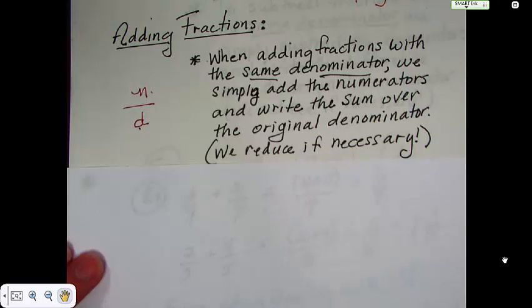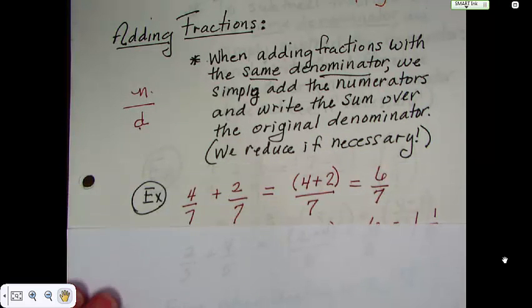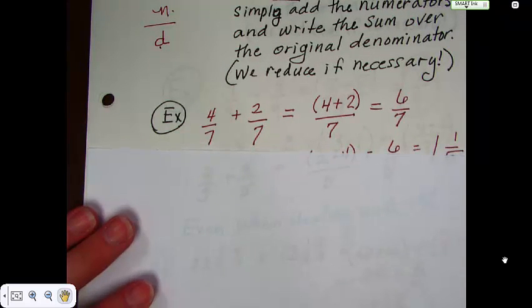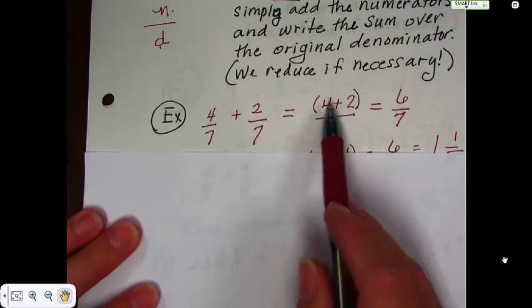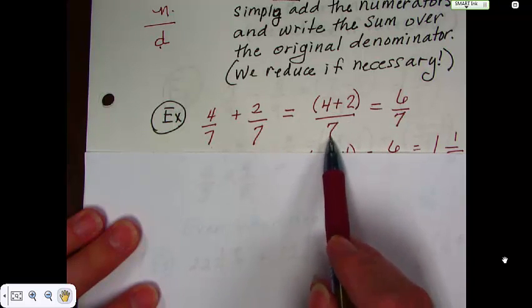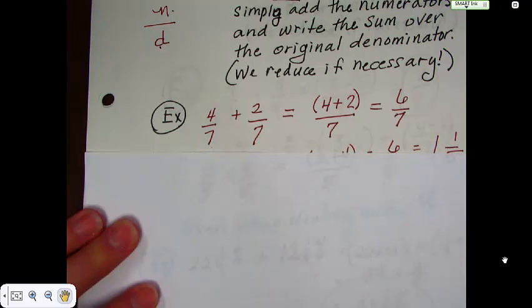And then reduce if you have to. Here's a couple of examples. 4 sevenths plus 2 sevenths equals, nominators are the same, 4 plus 2 over the original denominator, which is 6 over 7. We don't need to reduce that because it's in its lowest form.